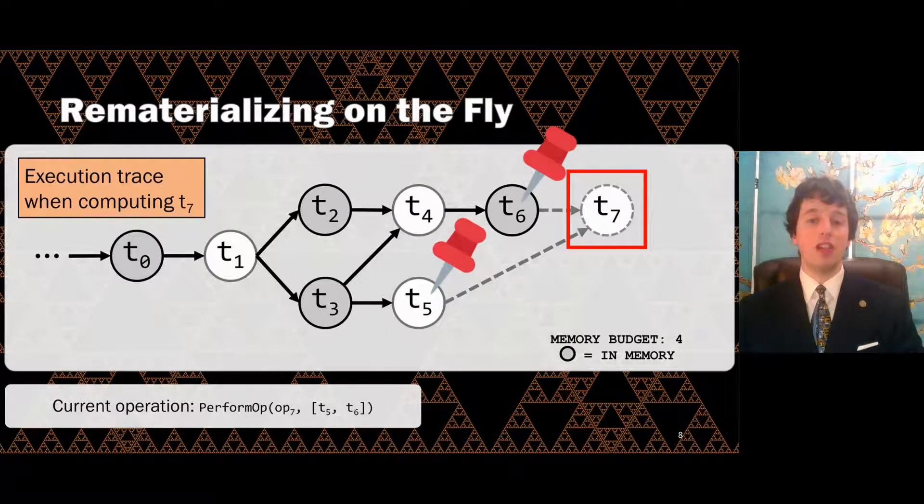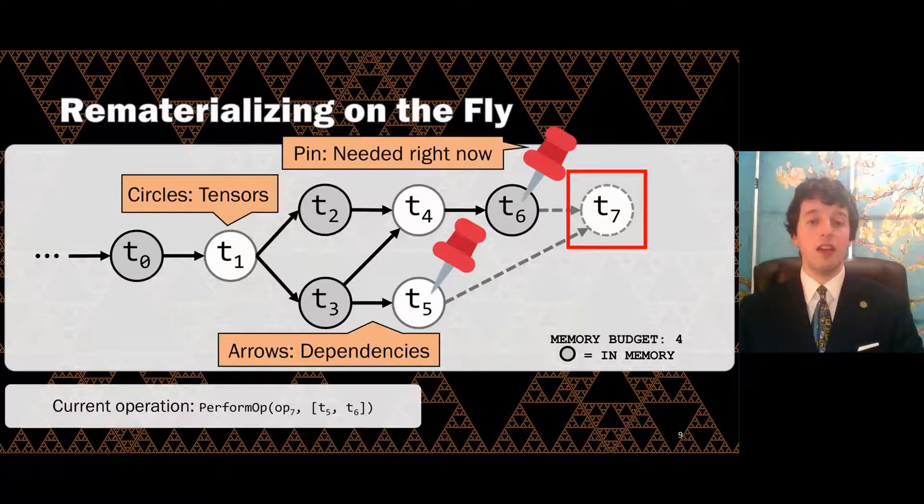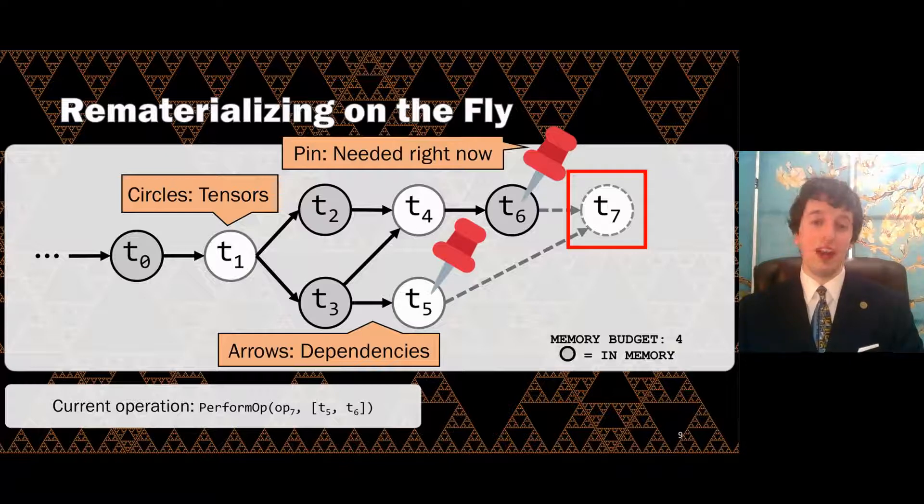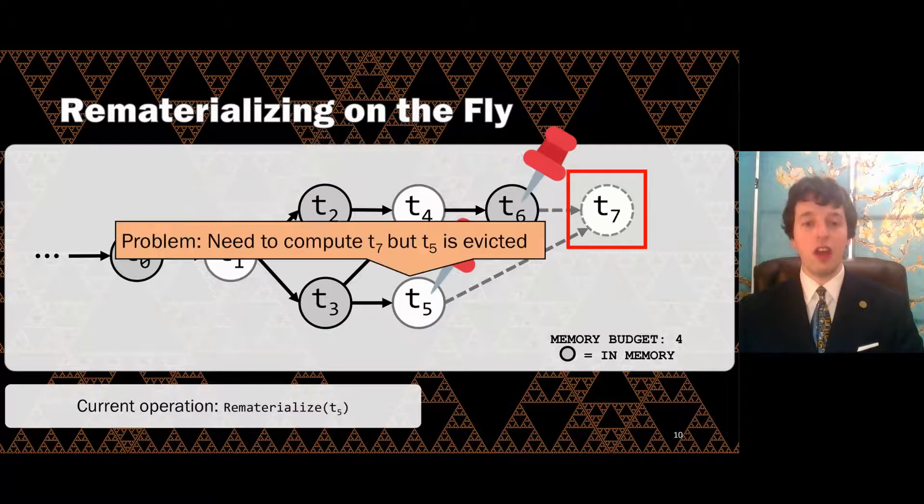Here is an example computation trace to show how DTR trains a model under a restricted memory budget. DTR has a very reductive view of the computation. We don't know whether this is the forward pass or backward pass, and we don't know the future. All we know is that these are the tensors in memory right now, these are their dependencies, and we are computing T7.